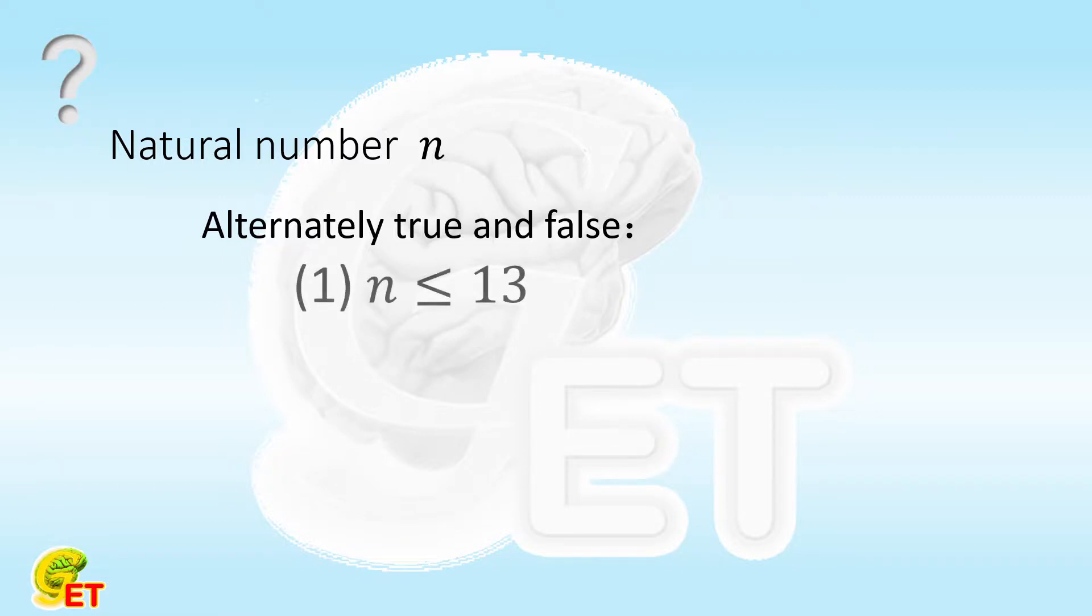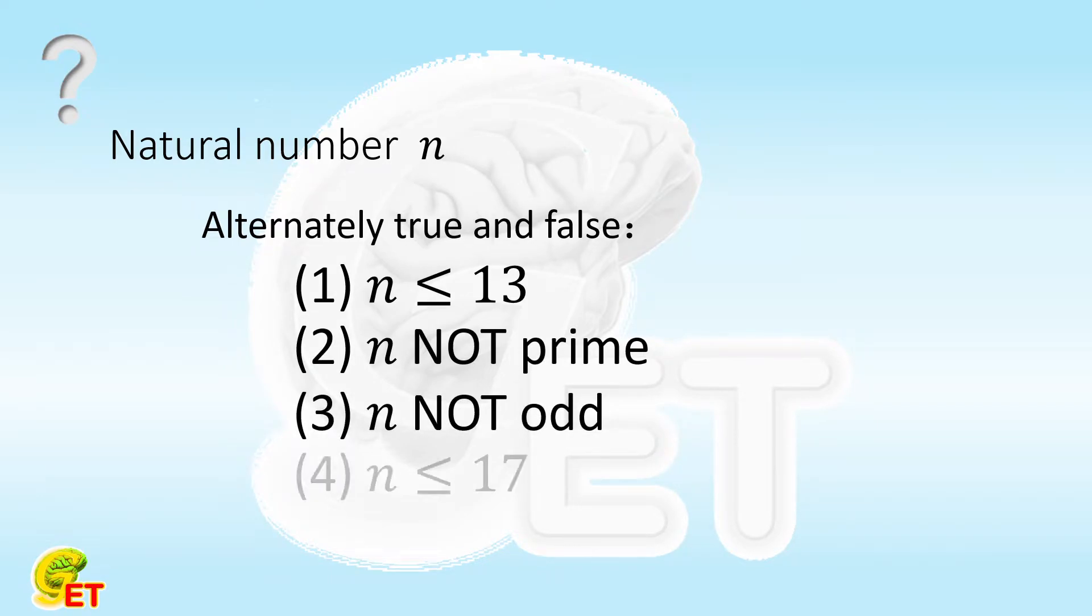First, n is not bigger than 13. Second, n is not a prime number. Third, n is not odd. Fourth, n is not bigger than 17.